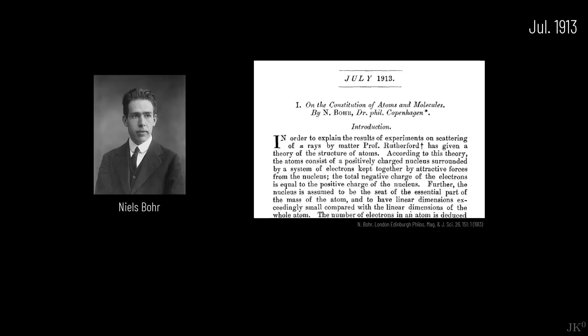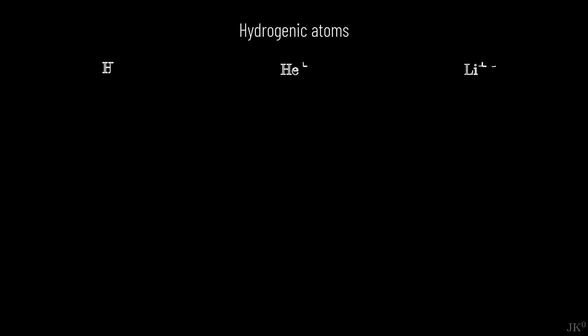After publishing the first part of the trilogy in July, Bohr extended his analysis to so-called hydrogenic elements. This name refers to elements in the periodic table, beyond hydrogen, but containing a single electron, like ionized helium, doubly ionized lithium, and so on.